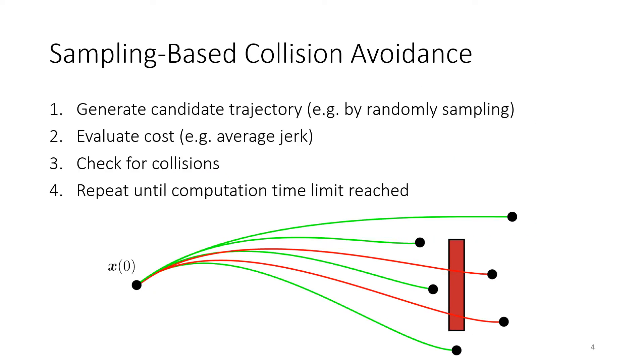In this work, we use a sampling-based planner in order to generate the trajectories for tracking. The way we do that is we generate a large number of candidate trajectories, evaluate each one of them with some cost function as defined by the higher-level planner, check each one for collisions with the environment, throwing away those that do collide with the environment.